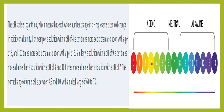Each number change on the pH scale is a 10-fold change. For example, a pH of 4 is 10 times more acidic than pH 5 and 100 times more acidic than pH 6. Similarly, a urine pH of 10 is 10 times more alkaline than pH 9, and 100 times more alkaline than pH 8 — because it is a logarithmic scale.